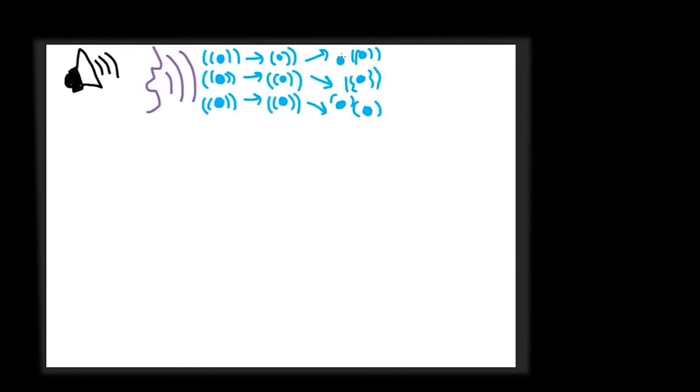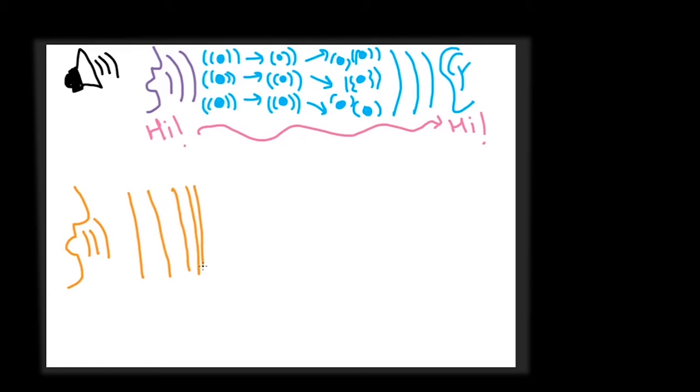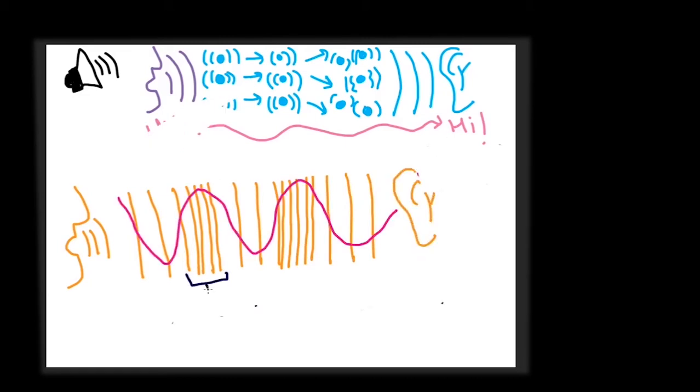When someone speaks, their vocal cords vibrate, creating a disturbance in the surrounding air. This disturbance is the vibration of atoms and molecules in the air. The atoms vibrating transfer energy to surrounding particles, which pass it to the next, and so on. The vibration of sound travels from speaker to listener. In a bigger picture, this transfer of sound can be seen as rarefactions and compressions which occur when particles vibrate in the direction of motion of waves. These kinds of waves are called longitudinal waves.